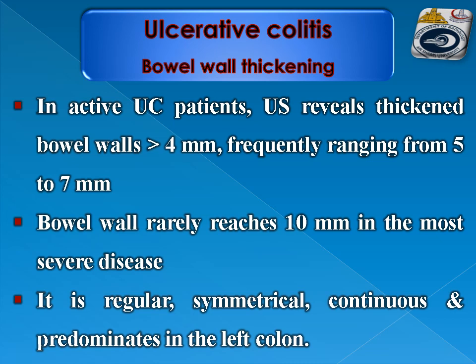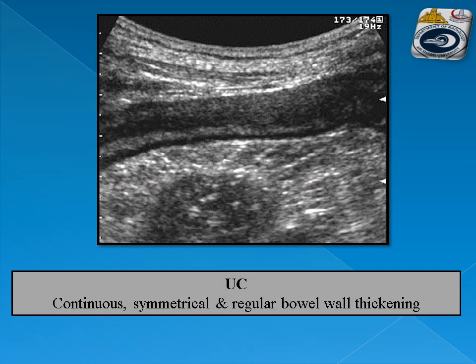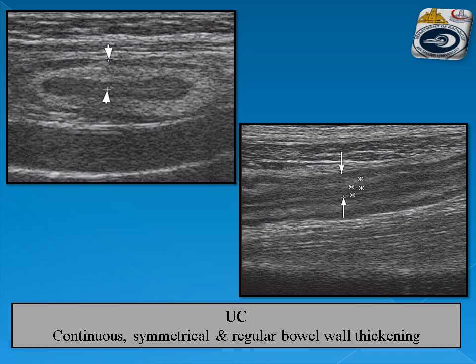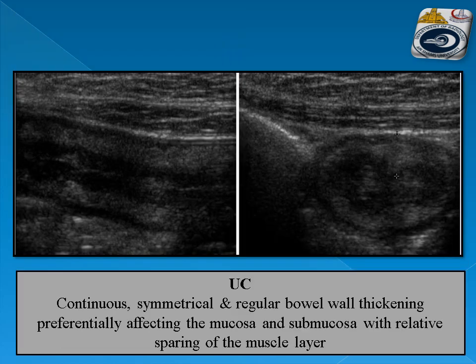Bowel wall thickening in active ulcerative colitis: ultrasound reveals thickened bowel wall usually more than 4 mm, frequently ranging between 5 and 7 mm, rarely reaching 10 mm in the most severe grades. It is regular, symmetrical, continuous, and predominates in the left colon. The thickening usually affects the submucosa and mucosa with sparing of the muscle layer. Examples show continuous symmetrical regular bowel wall thickening in transverse and longitudinal sections.